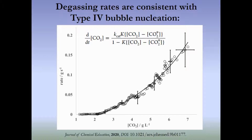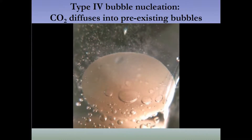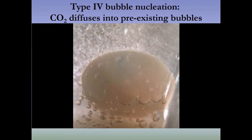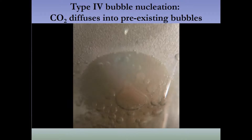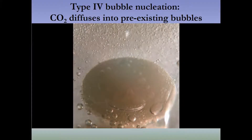We're also able to use type 4 bubble nucleation assumptions to derive an equation for the rate of degassing, shown at the top of the slide. The line through the data circles shows a pretty good fit under the assumption that pre-existing bubbles exist in the pores of the Mentos candy. Our conclusion is that type 4 bubble nucleation occurs: the pores on the Mentos candy hold pre-existing bubbles that CO2 diffuses into, and those bubbles expand, rise, and grow, causing the reaction.